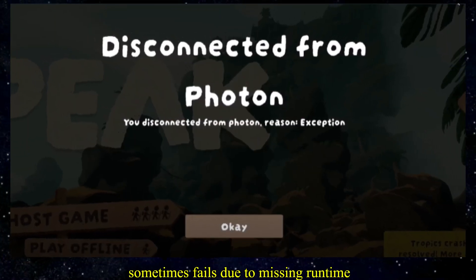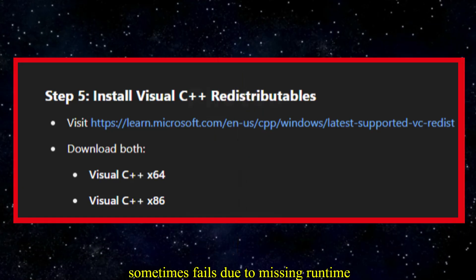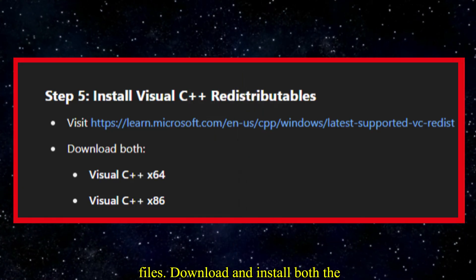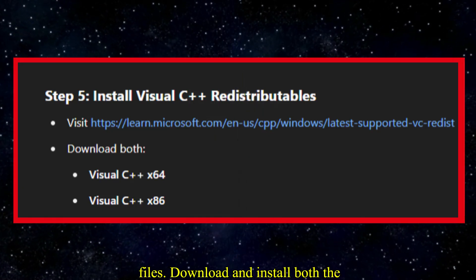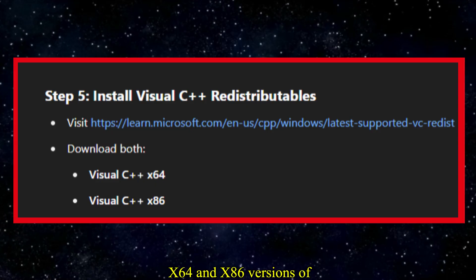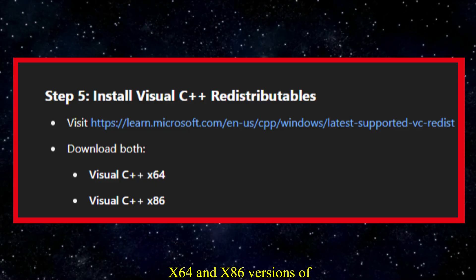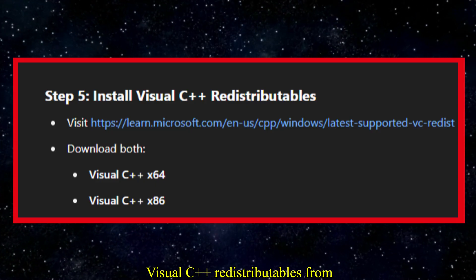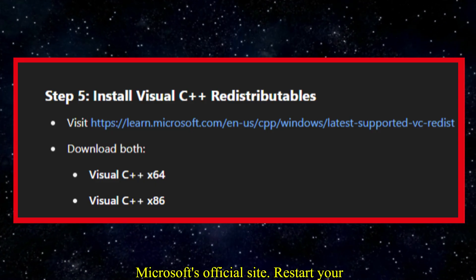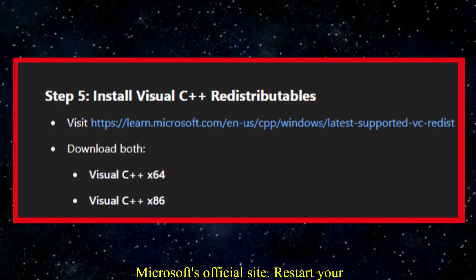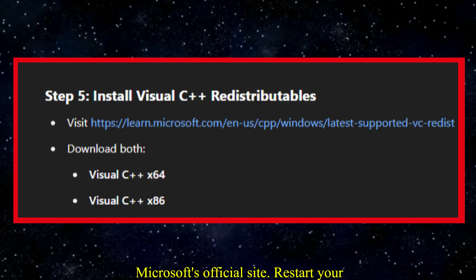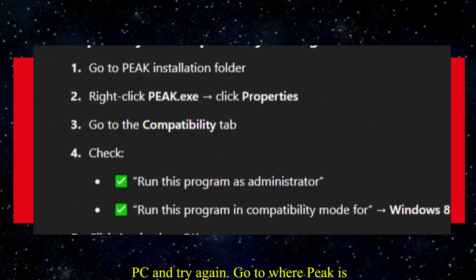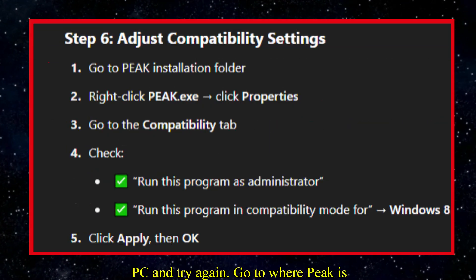Photon networking sometimes fails due to missing runtime files. Download and install both the x64 and x86 versions of Visual C++ Redistributables from Microsoft's official site. Restart your PC and try again.